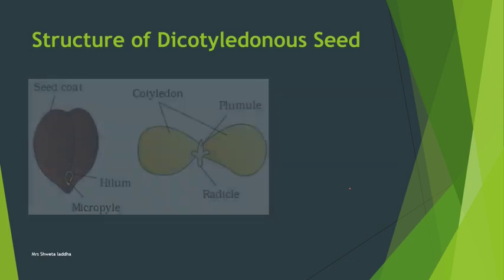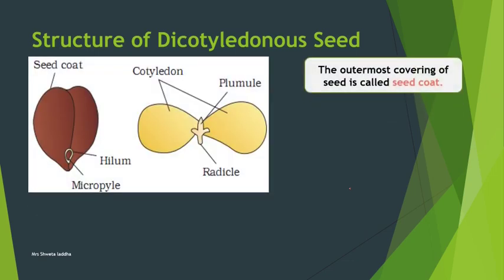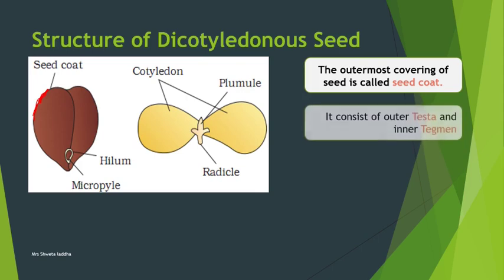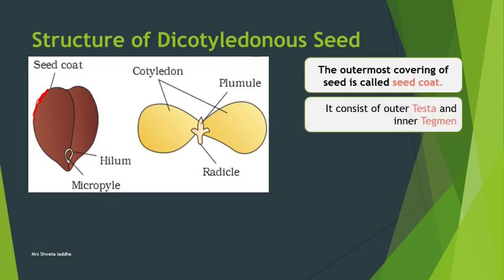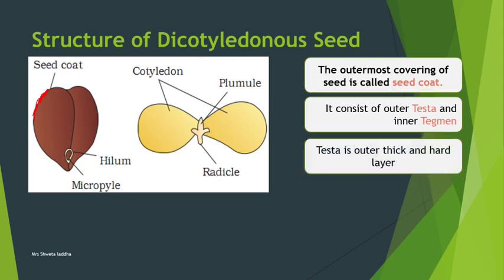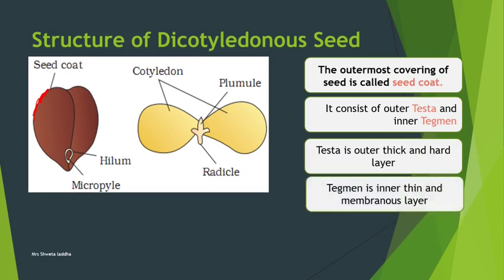Let us first see the structure of a dicot seed. The outermost covering of the seed is called the seed coat. You can see in this picture the outermost covering, which is the seed coat, and this seed coat is made up of two layers. The outer layer is called testa and the inner layer is called tegmen. Testa is the outer layer - it is thick, hard, and protective in nature - whereas tegmen is the inner layer and is membranous.